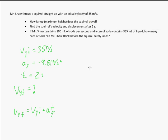Let's look at what's going to happen for your displacement. DY equals VYI·T plus ½·AY·T squared. That's how you're going to solve your second bullet point.